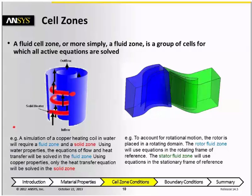On the left, there's a conjugate heat transfer problem, where it's a simulation of a copper heating coil in water, so you need to define a fluid zone for the water, and specify the material properties for the water, and then in that zone, it solves the equations of flow and heat transfer.